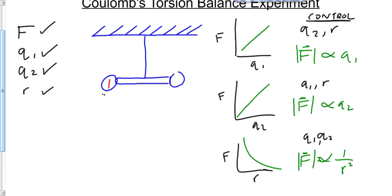1 over R squared. In other words, as R goes up, F goes down. Yeah. Exponentially, in fact.